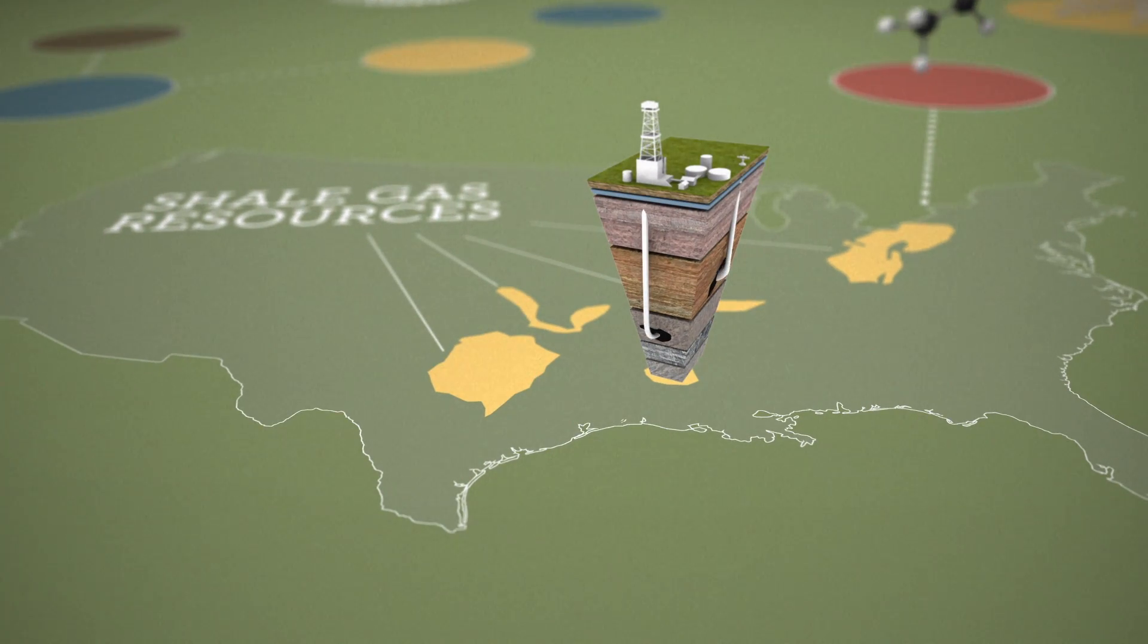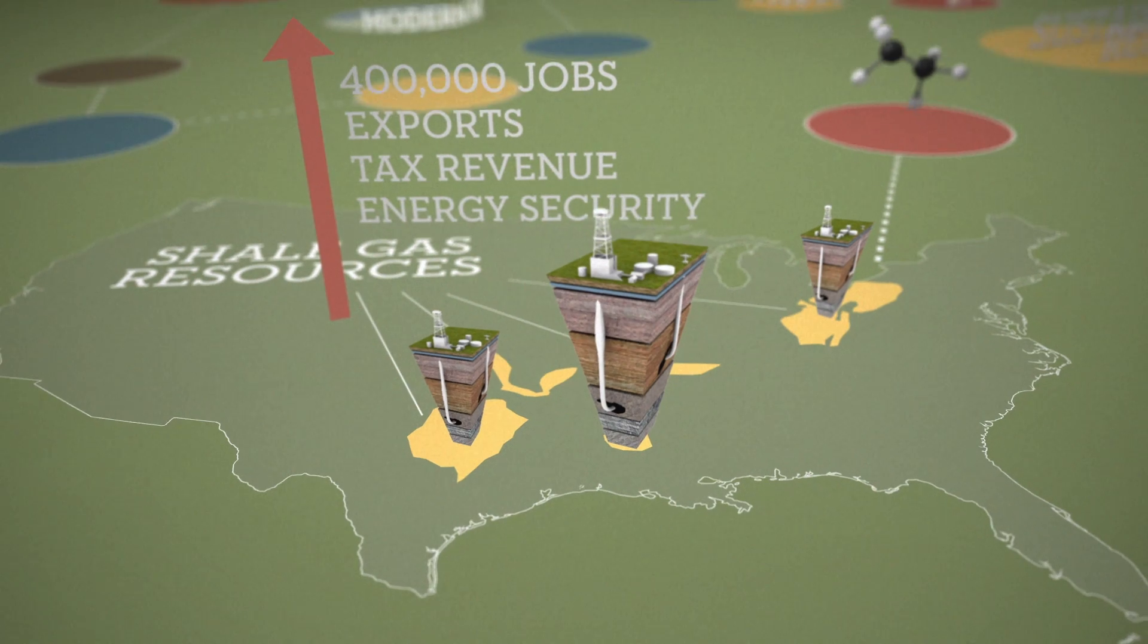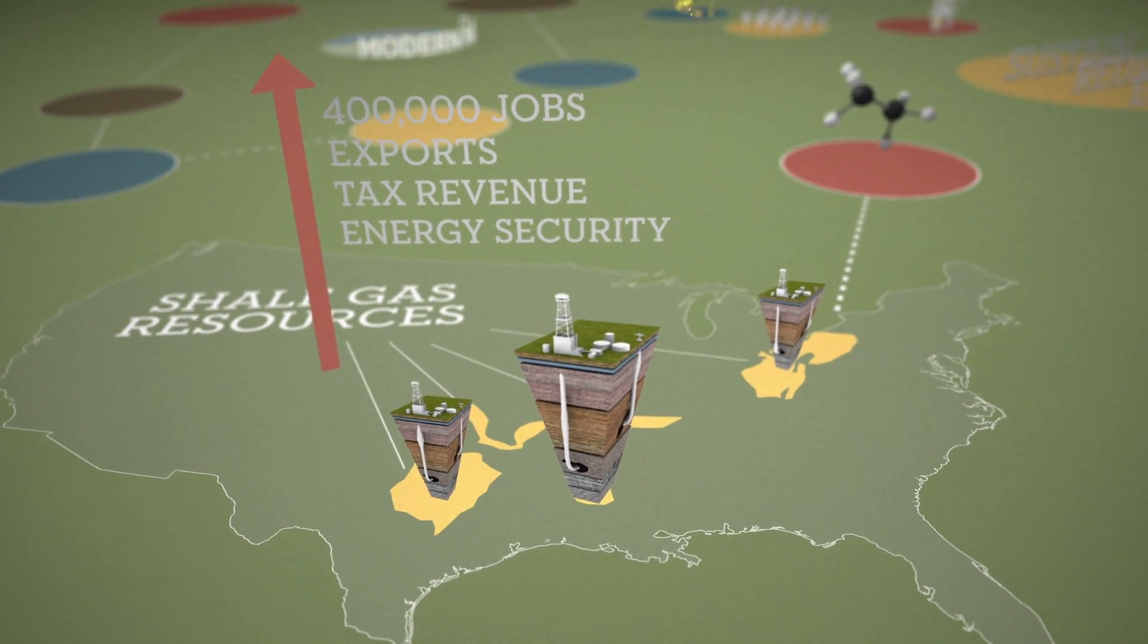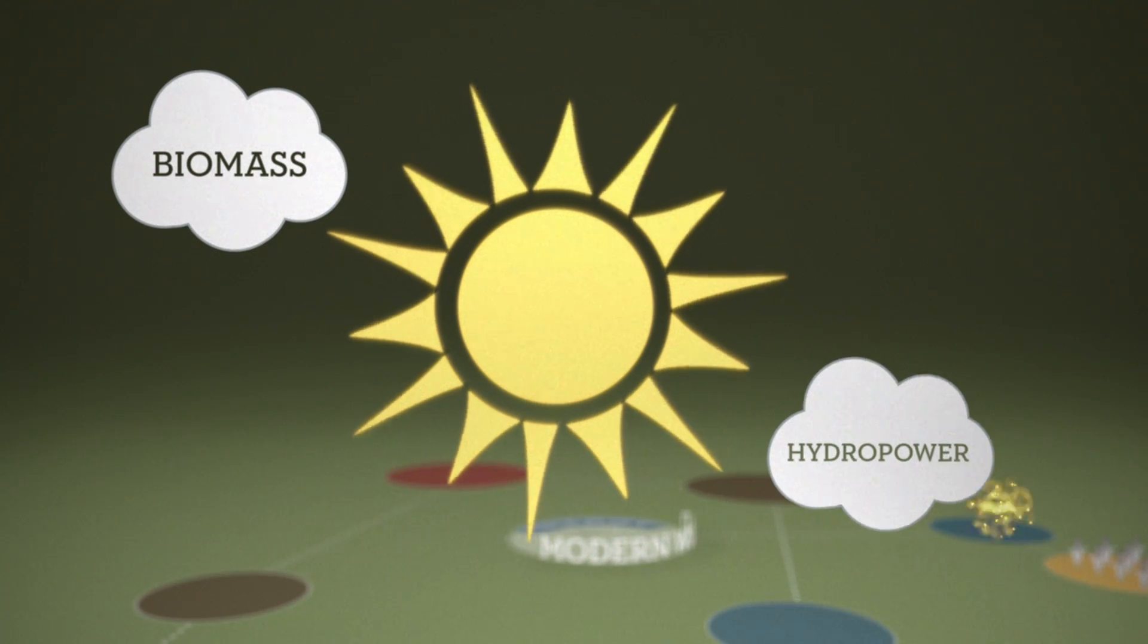Chemistry is utilizing local sources of natural gas that exists right here in the United States. Increasing ethyne supplies from shale gas can create hundreds of thousands of new jobs for Americans while science and technology work towards finding sustainable energy solutions.